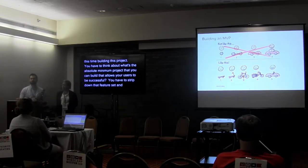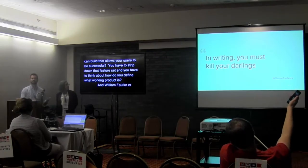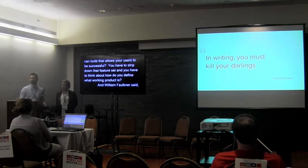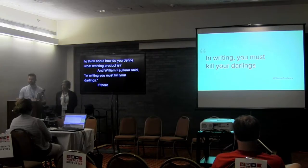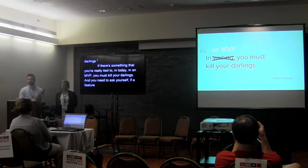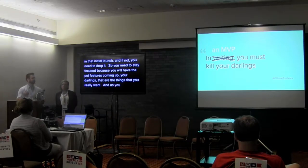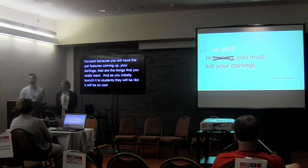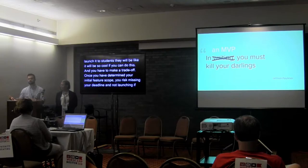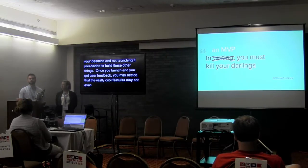You have to think about what's the absolute minimum project you can build that allows your users to be successful. You have to strip down that feature set. William Faulkner said, in writing, you must kill your darlings — there are things you really enjoy putting in your writing but your audience may not care about. So in an MVP, you must kill your darlings. You need to ask yourself if a feature absolutely must be included in that initial launch. If not, drop it. Stay focused. Because you'll have these pet features, your darlings, coming up. Once you've determined your initial feature scope, you risk missing your deadline if you decide to build those other things. Once you launch and get user feedback, you may find those really cool features aren't something users are actually using.